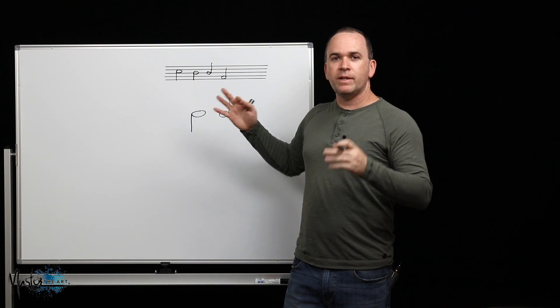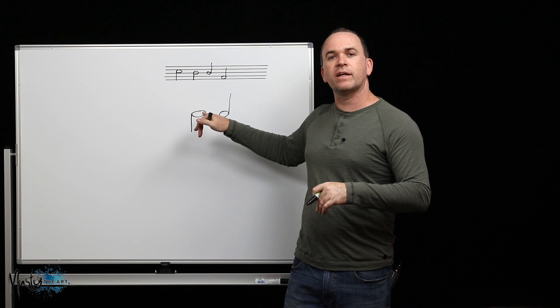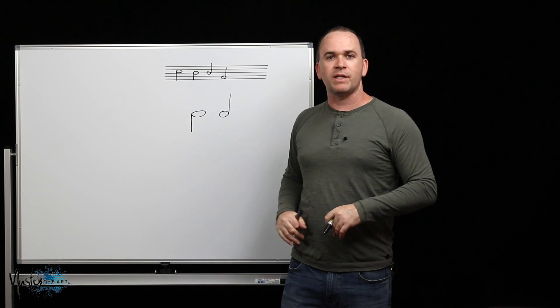Just remember, a minim is a half note and it's not coloured in. It's got the head like a semibreve does and a stem coming off it.